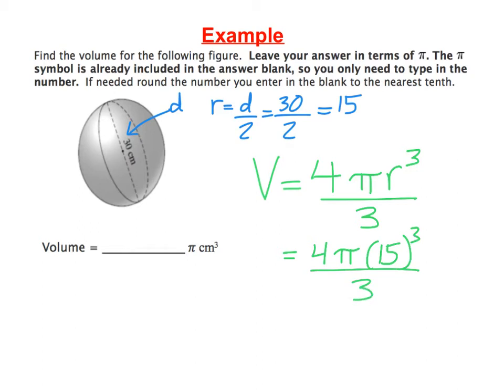When you put this into your calculator, first do 15 cubed. And 15 to the power of 3 is 3375. So on top of our fraction, we have 4 pi times 3375. And then that whole thing is divided by 3.